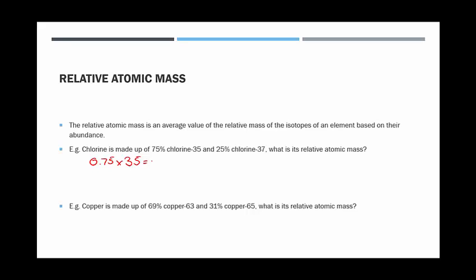If we need the relative atomic mass, we would need to do 0.75 times 35, because it's 75% chlorine-35, and that gives us 26.25. And we do 0.25 times 37, because it's 25% of chlorine-37, and that gives us 9.25.